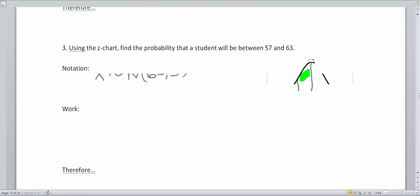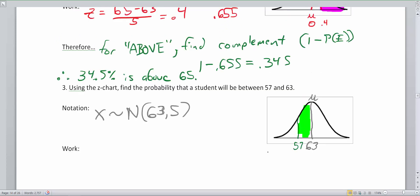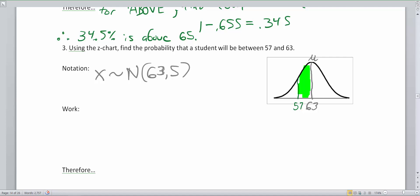For a between problem, if you have a between problem, you have to actually do two problems. You have to do a problem from the upper bound. So that would be z equals 63 minus 63 divided by 5. And you're also going to do a z from the lower bound, which is 57 minus 63 divided by 5. We've got two problems to do here.